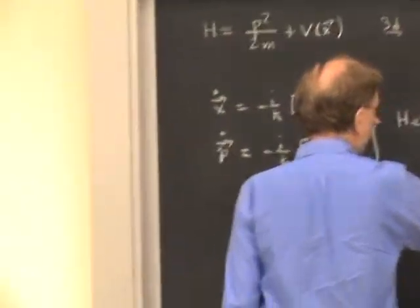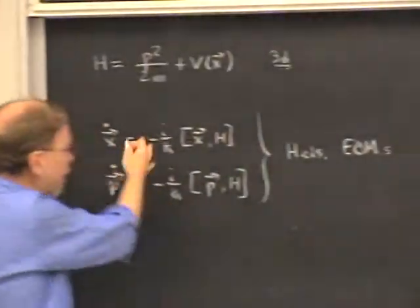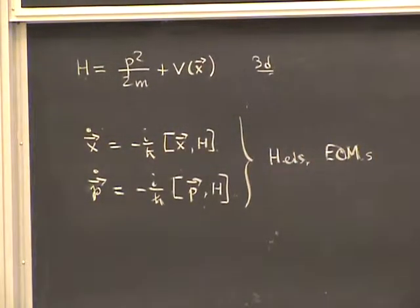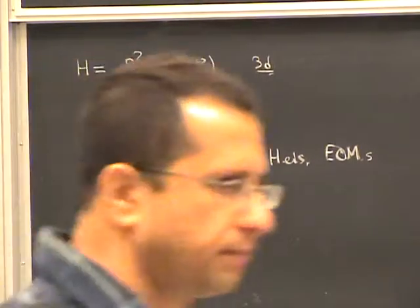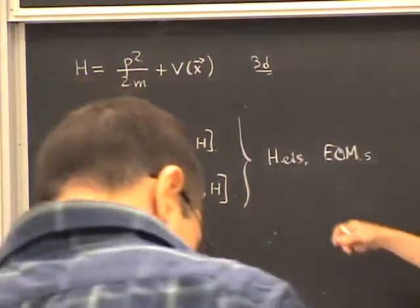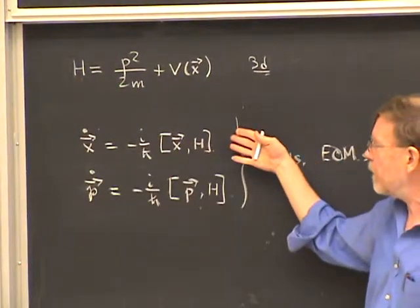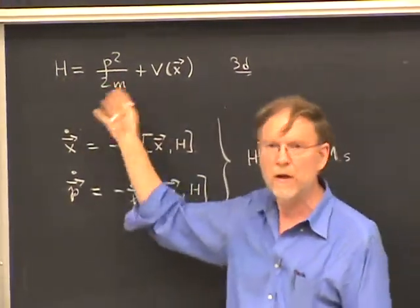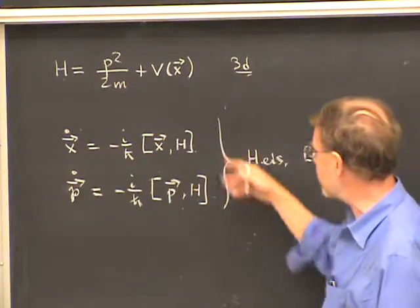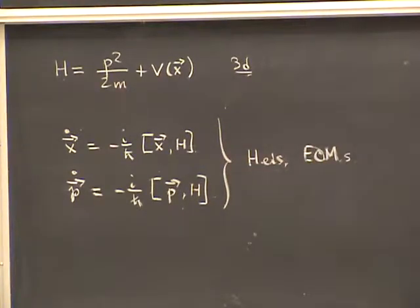It's understood that these operators x and p and the Hamiltonian are all in the Heisenberg picture, although I didn't put any subscripts on them. In general there's another term involving an explicit time dependence — a partial of x with respect to t. But since both x and p have no explicit time dependence, those extra terms don't appear. This is all there is — the Heisenberg equations of motion.